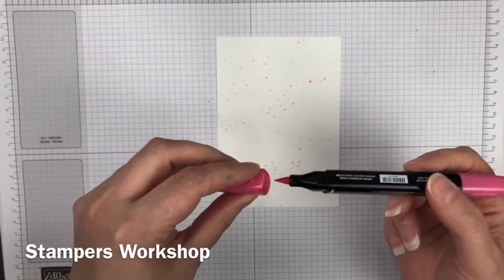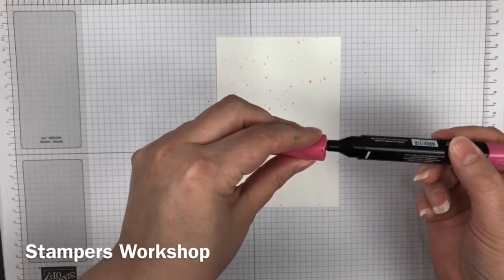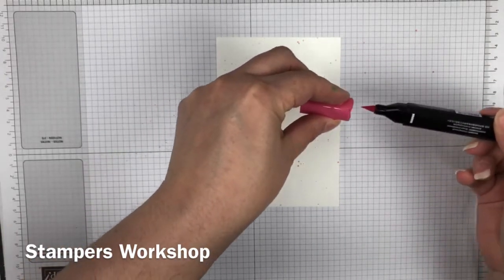As I said, just go gently because you don't want to ruin the nib. I'm just gently pulling down and it's flicking the color.